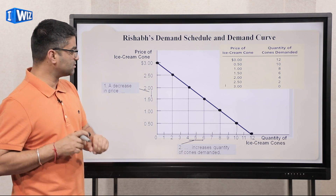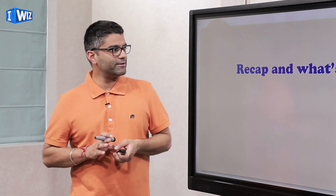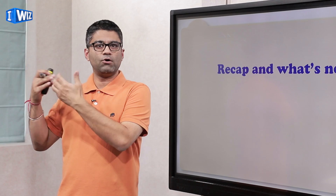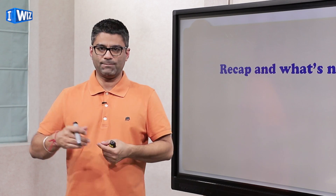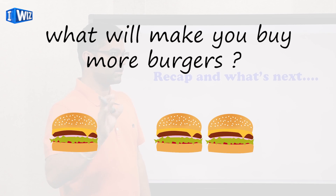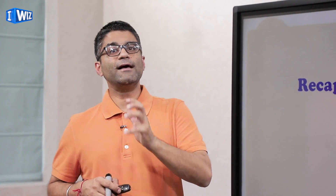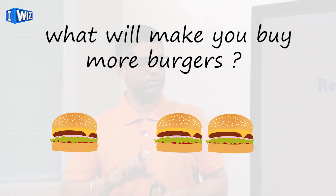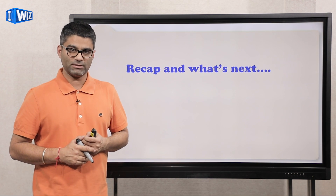That concludes today's video. To quickly recap: we've moved from analyzing bundles of goods to analyzing each good in more depth. Moving forward, I'll use burgers as an example. In this video you've learned that if the price of burgers goes down you'll buy more, and if the price goes up you'll buy less. For the next video, think about what else — other than the price of burgers — would make you want to buy more or less of that good. There are various factors and we'll get into each of them. We'll be getting into more demand-related concepts in the next video — see you then.